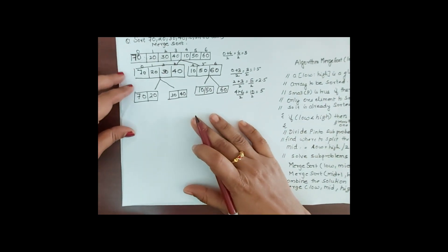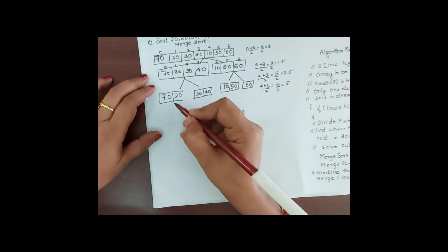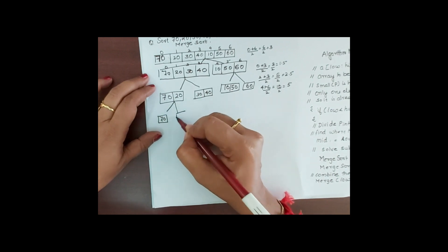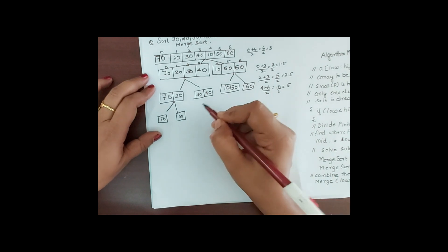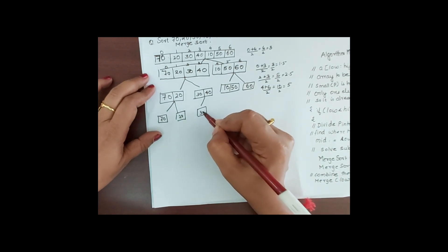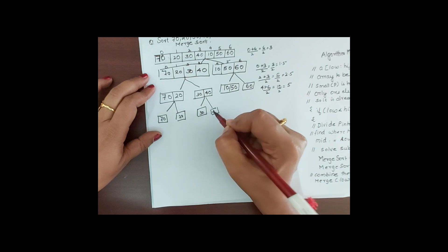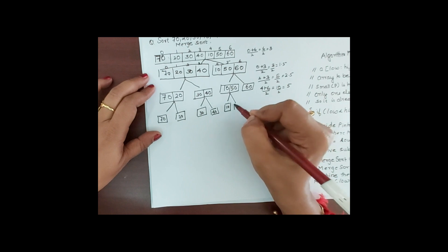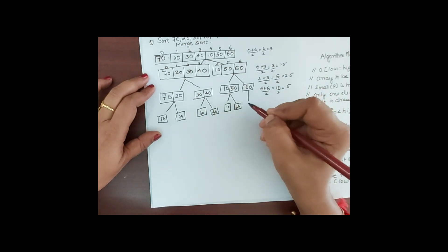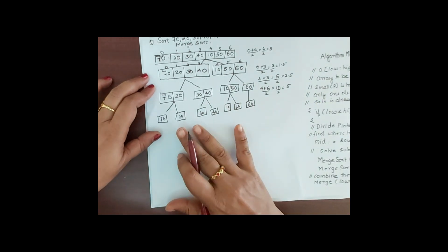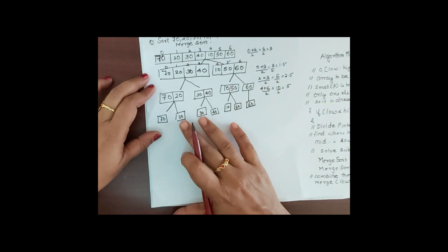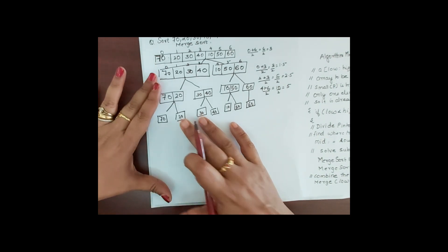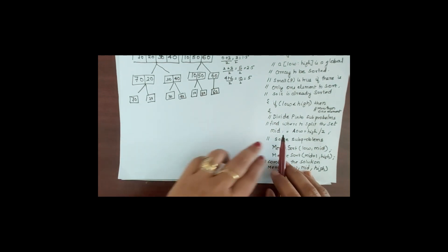Next, 70 and 20 are split into individual elements. Similarly, 30 and 40 become single elements, and 10, 50, and 60 each become single elements. We stop here because everything has become a single element.